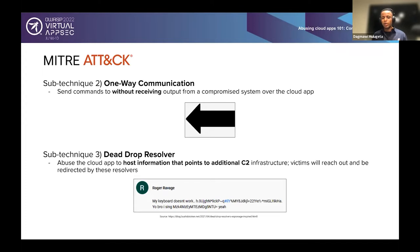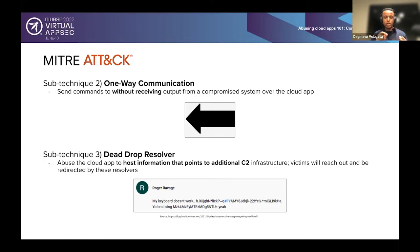The third sub-technique is dead drop resolvers. For those familiar with spy movies and espionage, you can think of a dead drop resolver as a digital dead drop. The attacker abuses the cloud app to host information that points to additional C2 infrastructure, so communication doesn't actually occur over the cloud application — but the endpoint where communication should occur is hosted on a cloud app. For example, here is a YouTube comment where the attacker left a seemingly innocuous message, but at the end is a Base64-encoded endpoint that the compromised system will pull down, decode, and reach out to for additional commands.